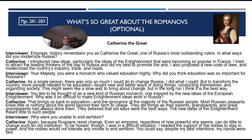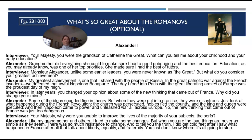The interviewer asks: Why was it so difficult to make Enlightenment ideas work in Russia? Catherine says: That brings us back to education and the ignorance of the majority of Russian people. Most Russian peasants knew little or nothing about the world beyond their farm or village. They did things as their parents, grandparents, and great-grandparents had always done them. They believed that old ways were the best ways. The new ideas of the Enlightenment meant little to such people. The interviewer then asks why Catherine was unable to end serfdom — though her answer is not captured here. Again, not exactly what she said, but what she perhaps would have said from everything we have studied.